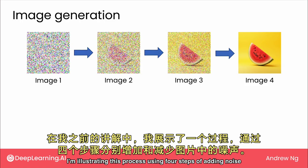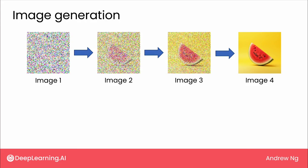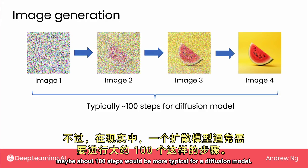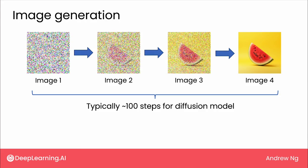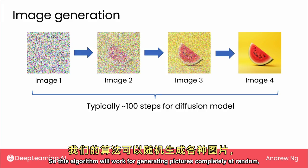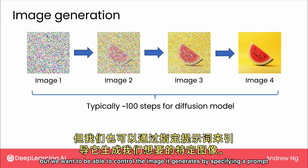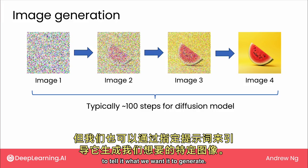I'm illustrating this process using four steps of adding noise and four steps of removing noise. But in practice, maybe about a hundred steps would be more typical for a diffusion model. This algorithm works for generating pictures completely at random, but we want to be able to control the image it generates by specifying a prompt to tell it what we want it to generate.